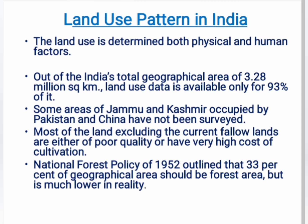The land use pattern in India is determined by both physical and human factors. Physical factors include topography, climate, soil types, etc. Human factors are population density, technological capability, culture and traditions. Out of India's total geographical area of 3.28 million km², land use data is available only for 93% of it, as some areas of Jammu and Kashmir occupied by Pakistan and China have not been surveyed. The National Forest Policy of 1952 outlined that 33% of geographical area should be under forest, but the reality is much lower.